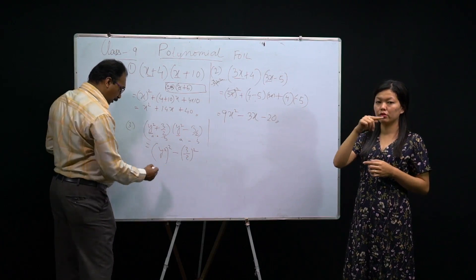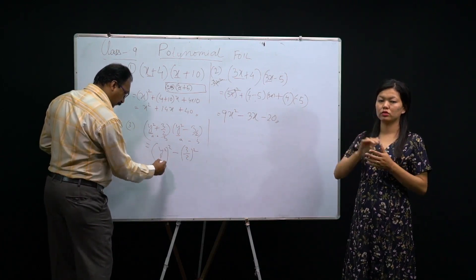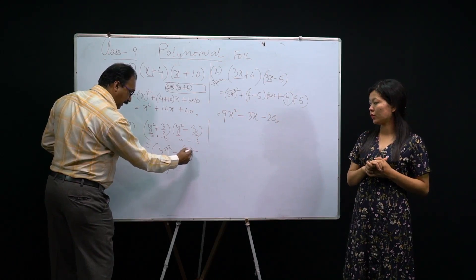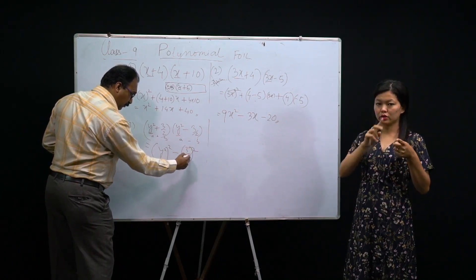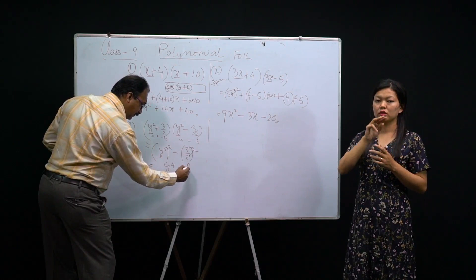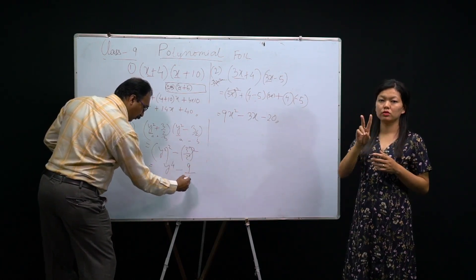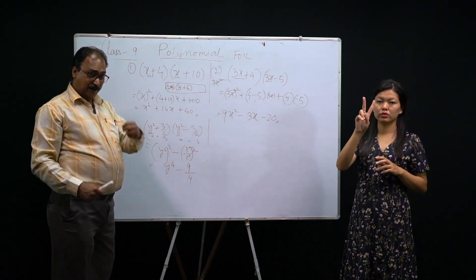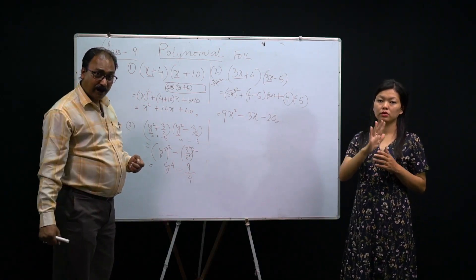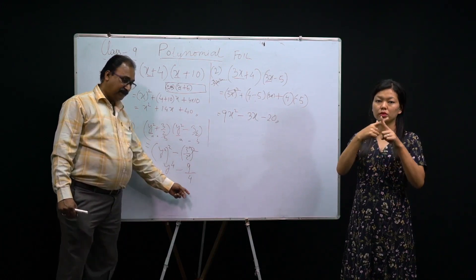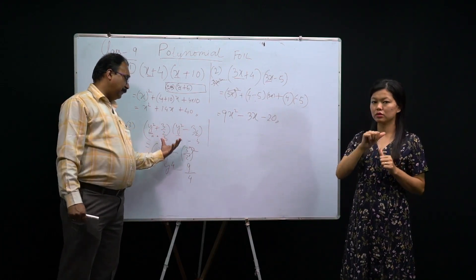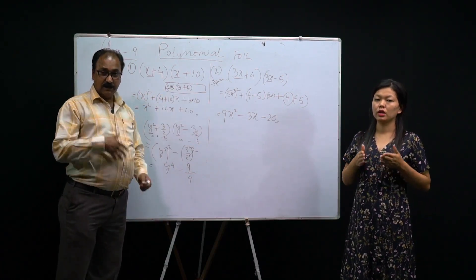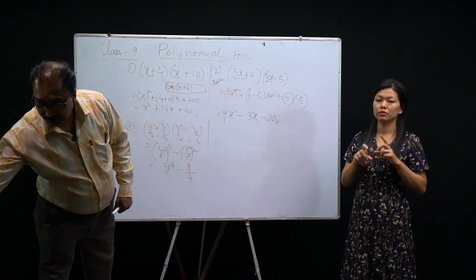Then minus b², where b is 3/2, so (3/2)². How much does it come? y to the power 4. Both are under the square, so these are also squared. 3² = 9, 2² = 4, giving 9/4. So the answer is y⁴ − 9/4. This is the way we find a product by applying the formula. Now we come to some more applications.